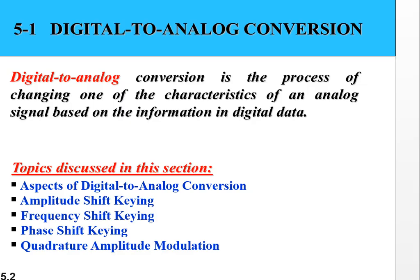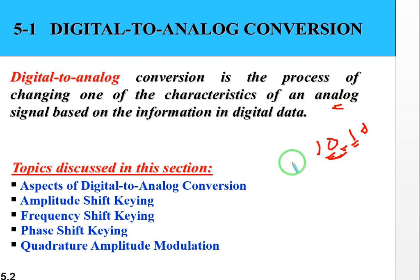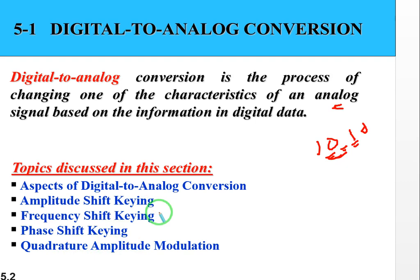Digital-to-analog conversion is the process of changing one of the characteristics of an analog signal based on the information in digital data. Once we have digital data, say 1, 0, 1, 0, and we want to transmit it in analog form, we apply methods such as Amplitude Shift Key, Frequency Shift Key, Phase Shift Key, and Quadrature Amplitude Modulation.